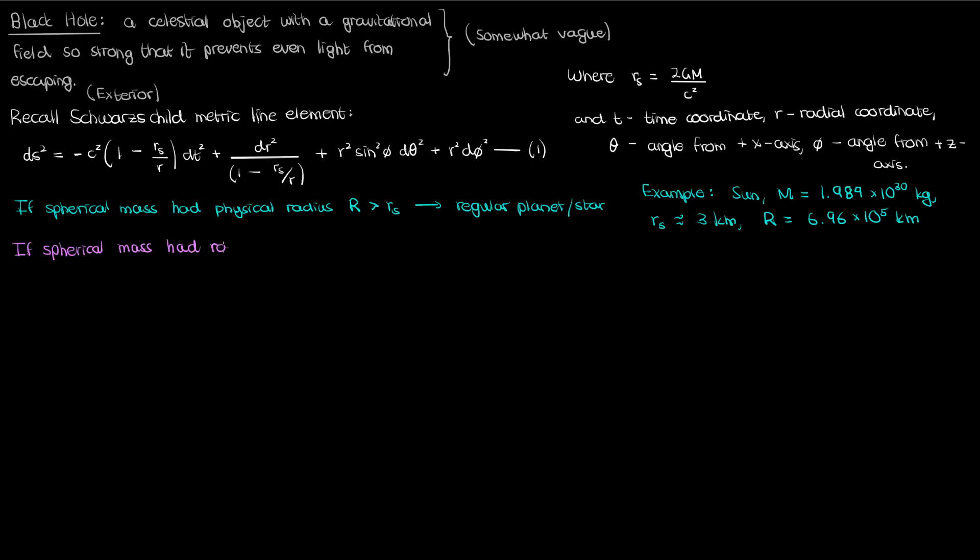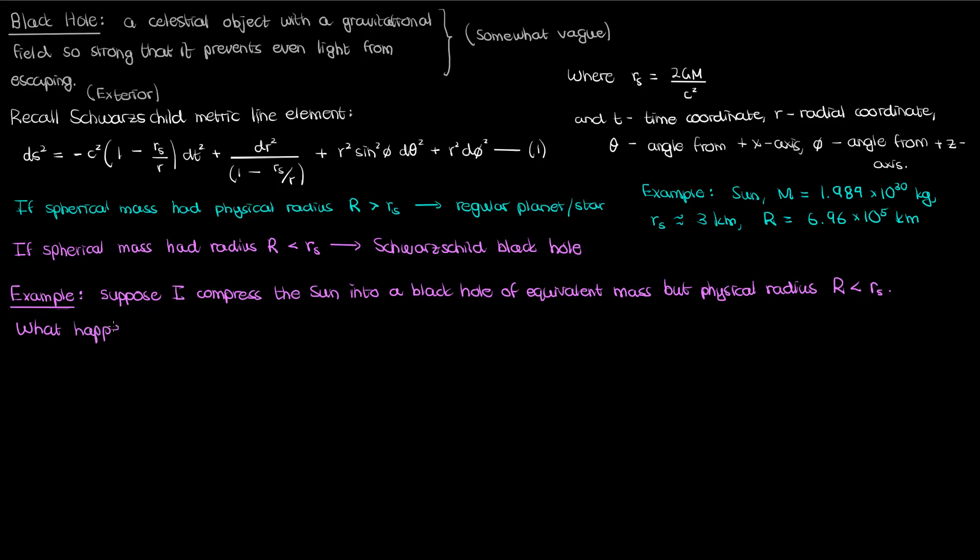However, if that spherical mass had a radius smaller than its Schwarzschild radius, then our mass would be a black hole. And I'll explain why. So let's suppose our spherical object of mass m is really tiny, such that its radius is smaller than r sub s, its Schwarzschild radius. So for example, let's say I compress my Sun into a Schwarzschild black hole with a size that is less than the 3 kilometer Schwarzschild radius, but with the same mass as the original Sun. What would happen if I do this?